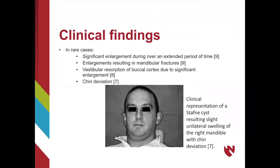The extremely rare outlier cases have more noticeable changes that can be visualized clinically. Characteristics that can be seen include significant enlargement over a lengthy period of time. Enlargements can be so severe that there is a great risk of a fragile or eventually fractured mandible. Therefore, there is also likely to be vestibular resorption of the buccal cortex in these cases. Chin deviation has been noted in patients with a Staphne cyst, though this has been noted in very few cases. This image shows a patient with Staphne cyst that has resulting swelling of the right mandible with slight associated chin deviation to the affected side.